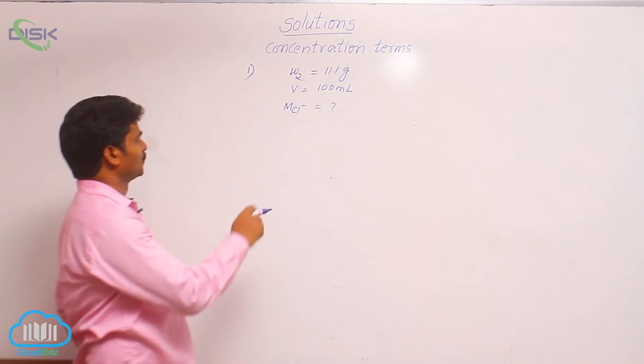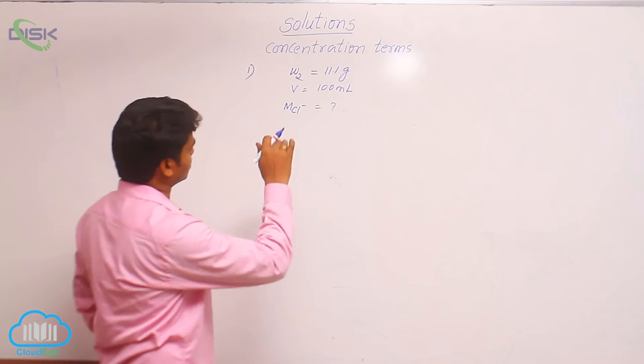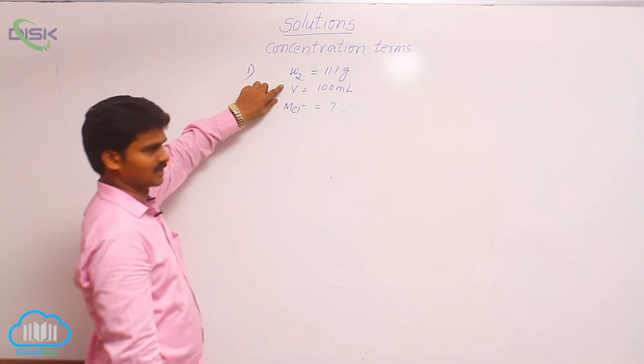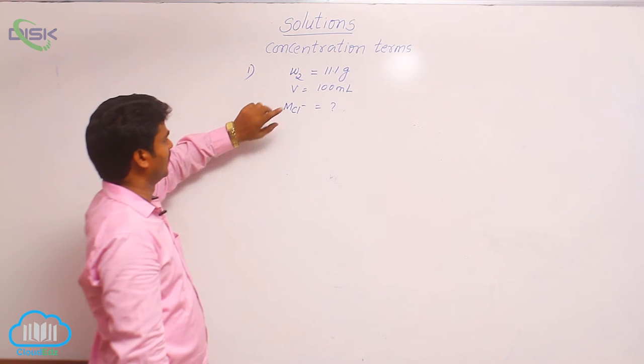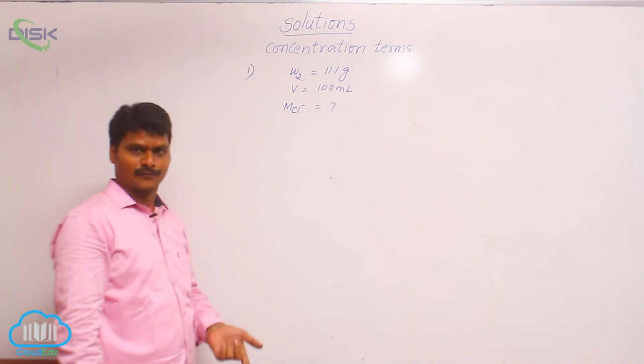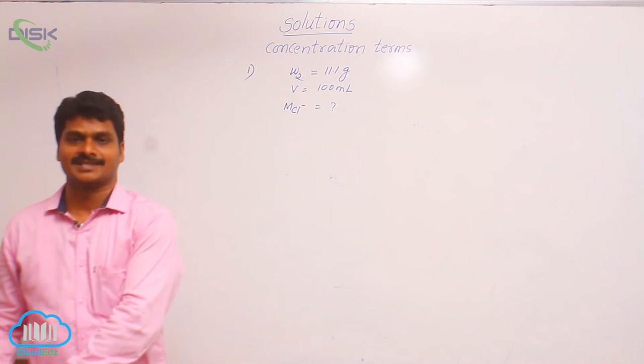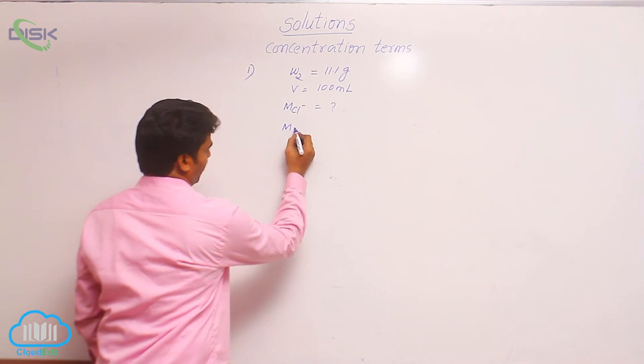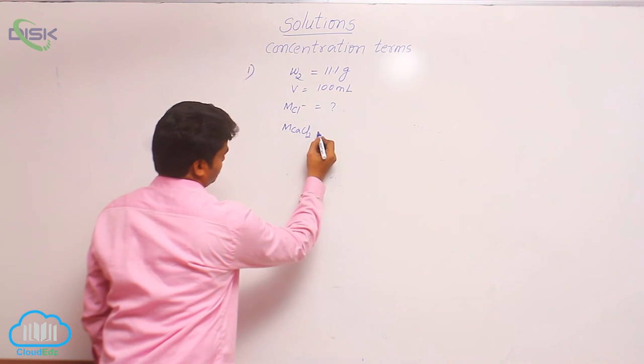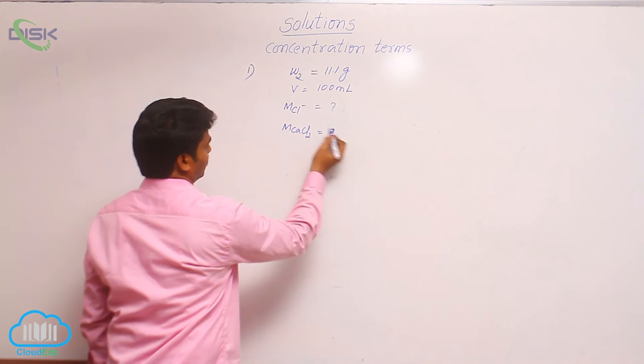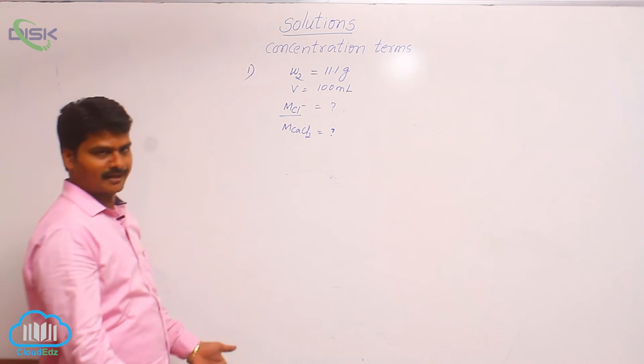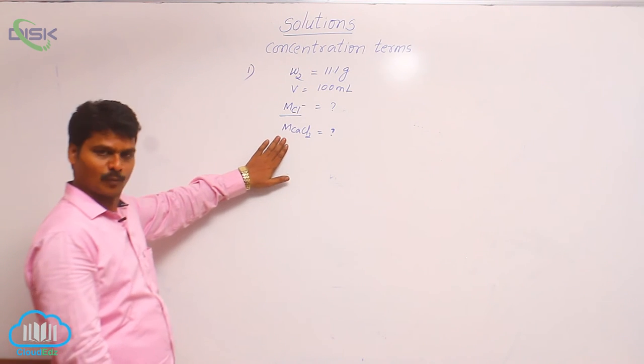See, how to solve this? Which terms are given here? Weight of solute, volume of solution are given. Molarity of chloride ion we have to find out. Here the solute is calcium chloride. First we have to find out the molarity of calcium chloride, after that we go to molarity of chloride ion. So let us use the formula of molarity first.